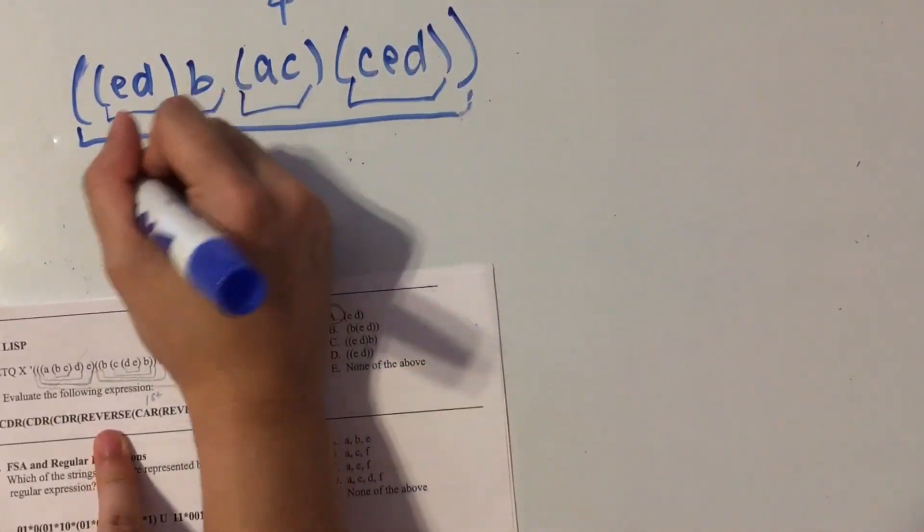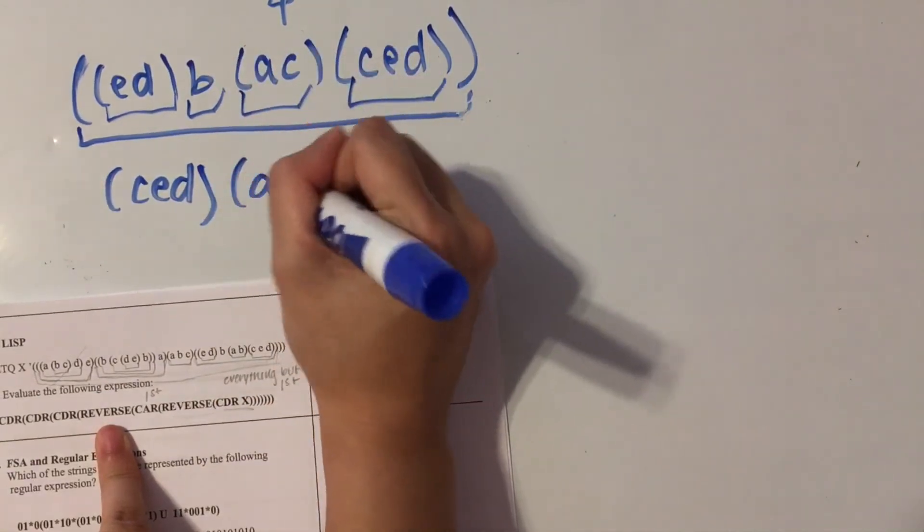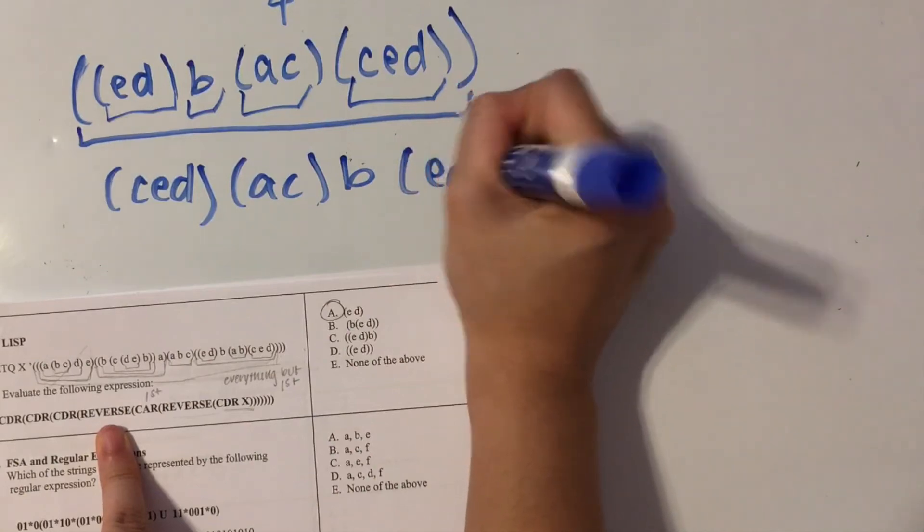So going from backwards to forwards, we have a list of C, E, D. Then we have this A, C list, a single element B, and the list with E and D.